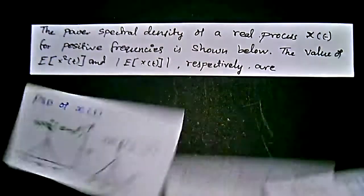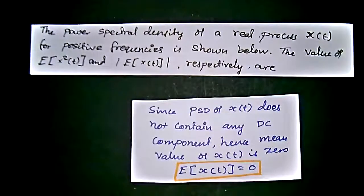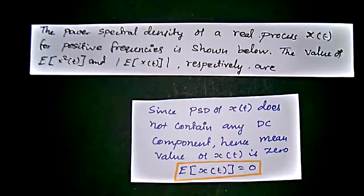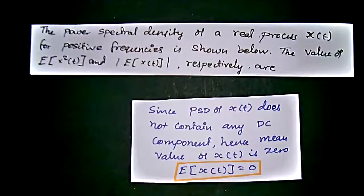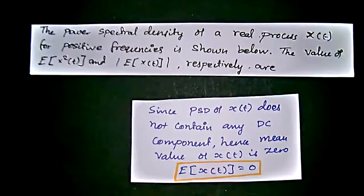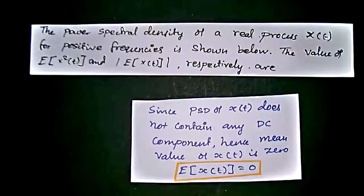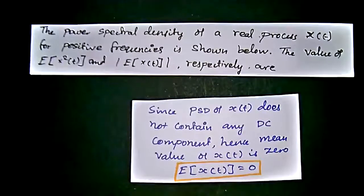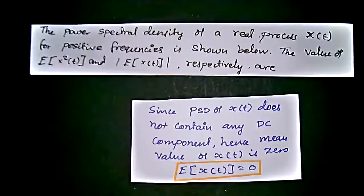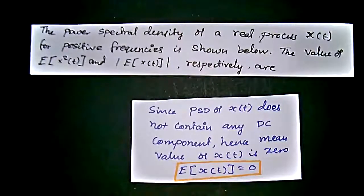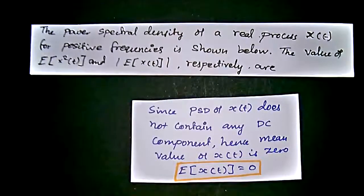Since the PSD, the power spectral density of X(t), does not contain any DC component, hence mean value of X(t) is zero. When the value of X(t) is zero, the expectation of X(t), mean value, could be zero because there is no value for X(t). The function itself is getting zero, so there is no way to find the mean value for that function.